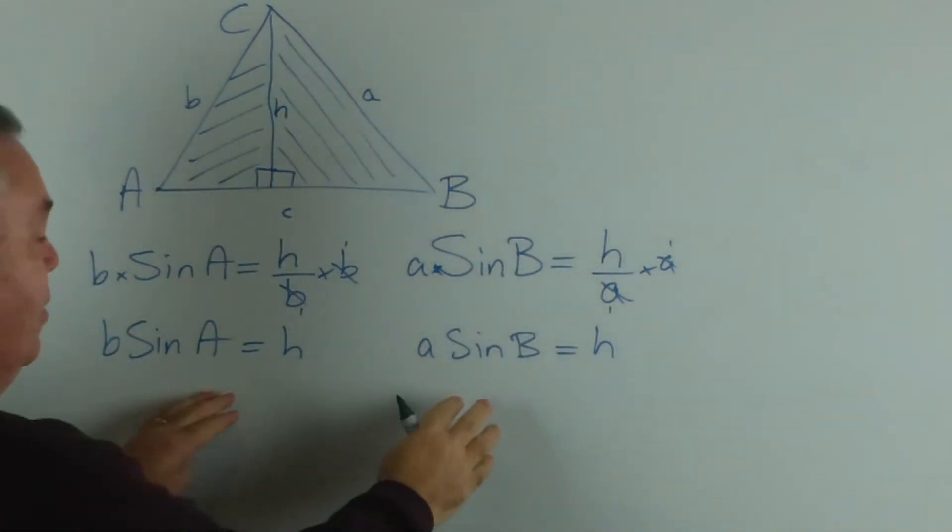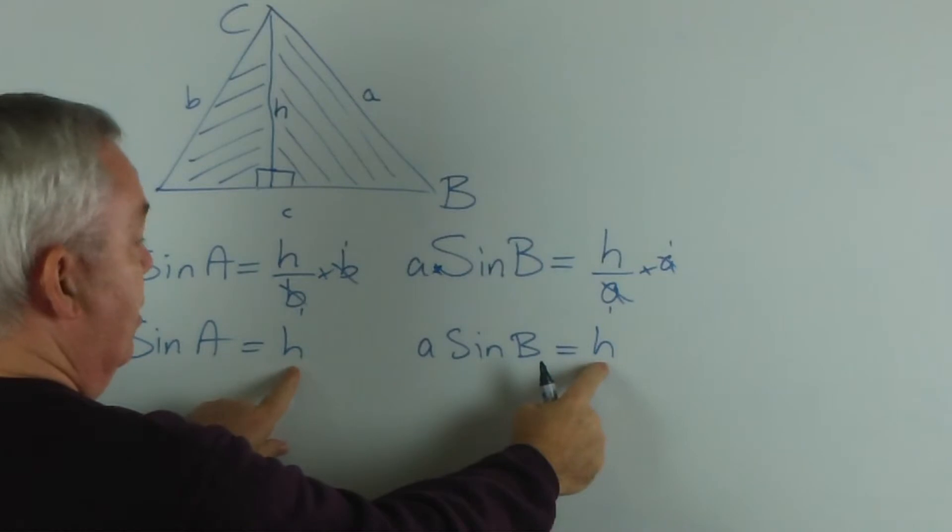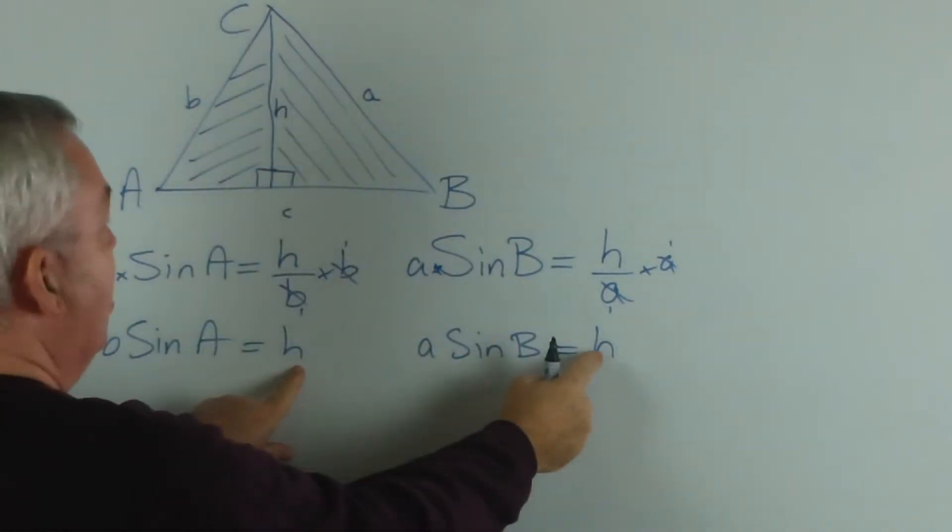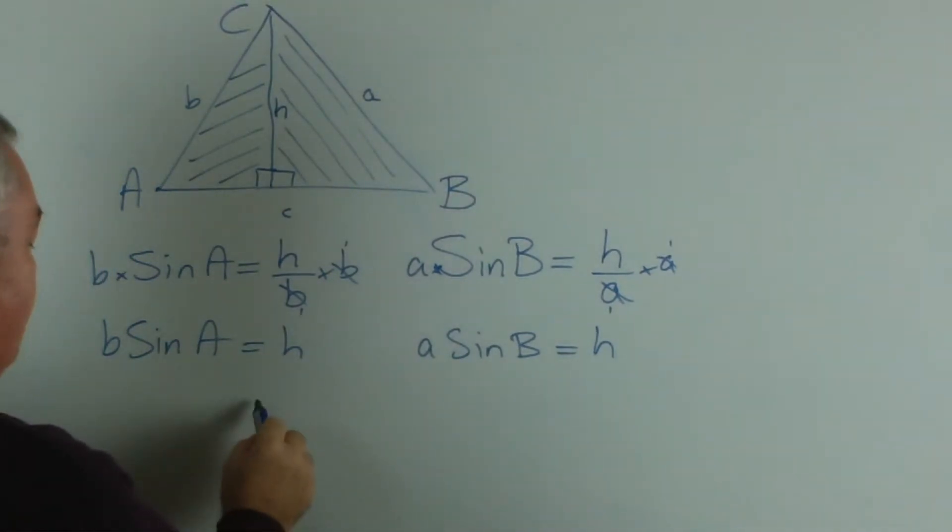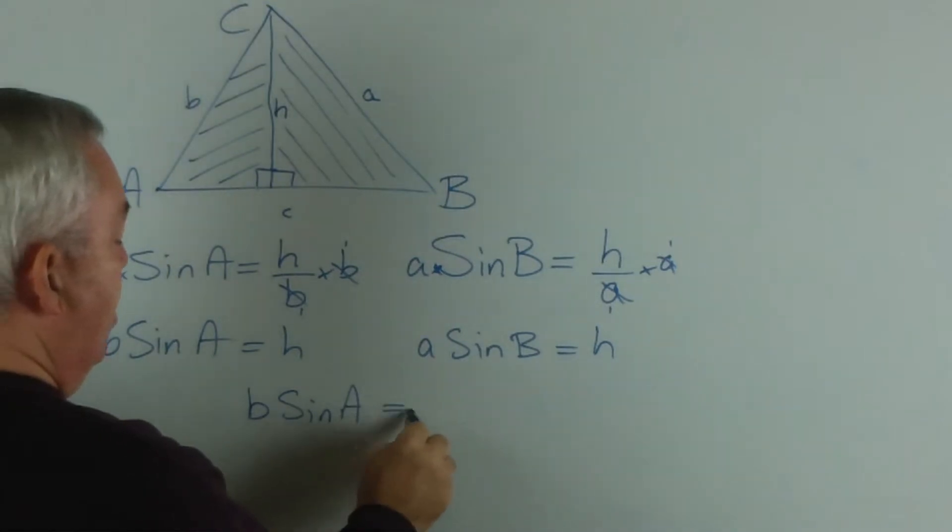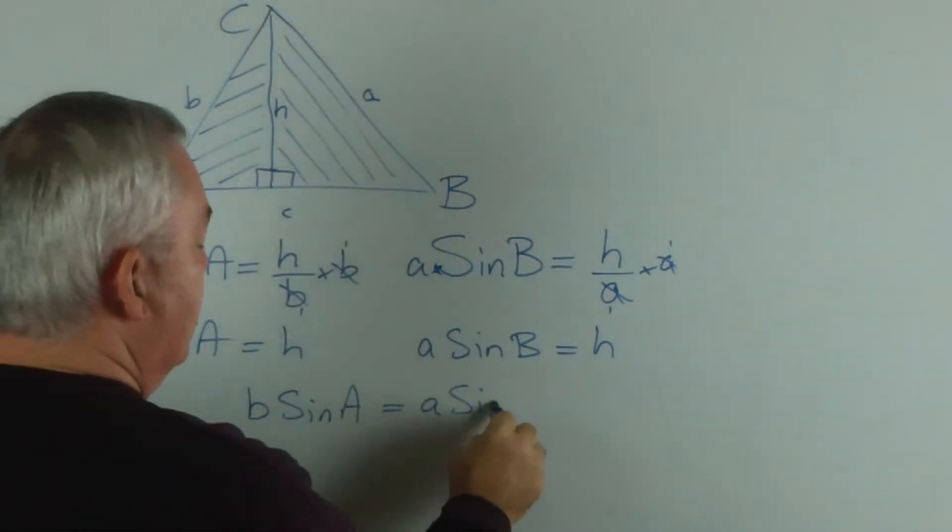This is not particularly difficult. Since we have only the one height, it's the same height for both triangles. If they're equal, then so are these. So I can write b sin A equals a sin B.